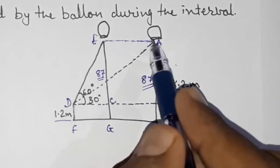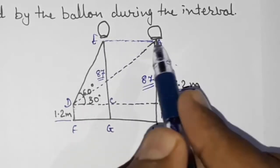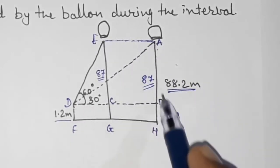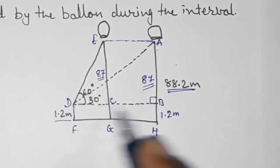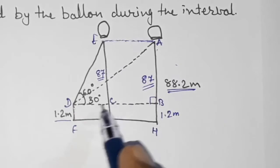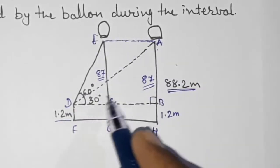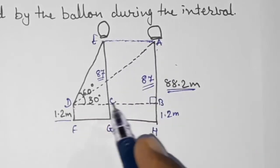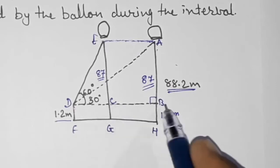Now we want this distance. Directly we cannot find this distance because it is not present in any right angle triangle. Now here you can see we are getting two right angle triangles: one is ABD and second is ECD. We are going to find out this distance with the help of that. For finding this I am going to find out this, so obviously these two will be equal, so what will be CB, that same length will be of EA also.